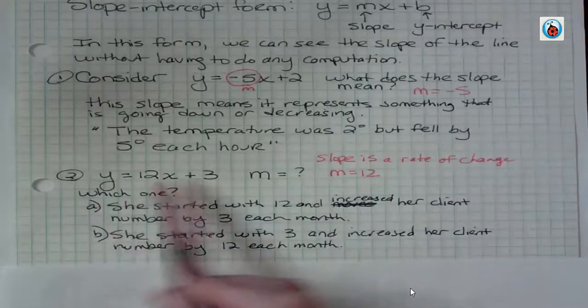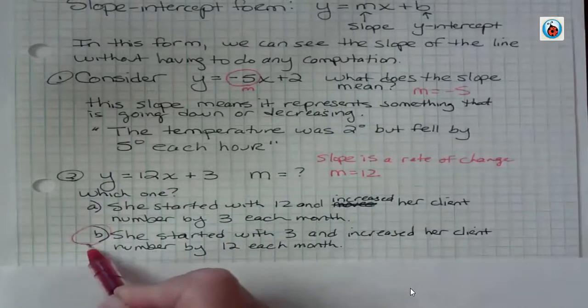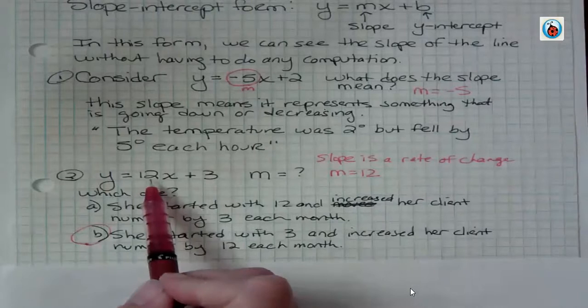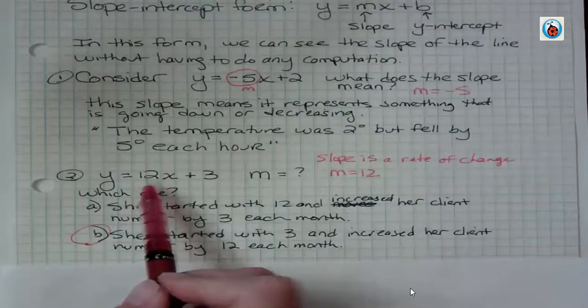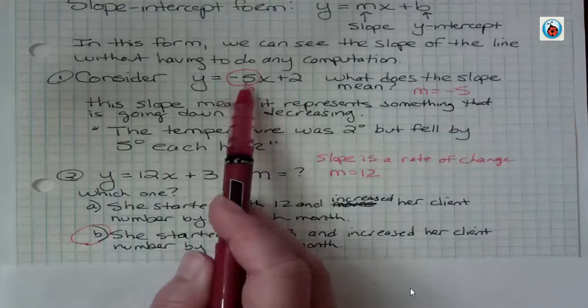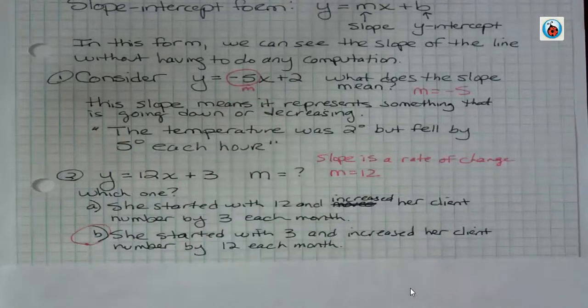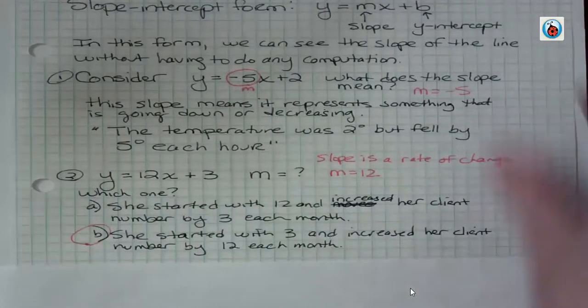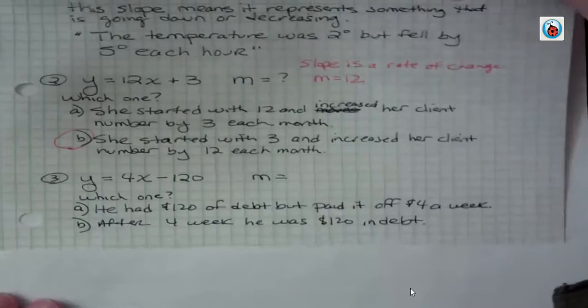That's the description that makes sense for this equation. Starting at 3 and increasing by 12 every month. In this case, it's positive slope, so she's increasing. In the last one we saw, it was a negative slope, so they were decreasing or falling. That's an important thing about negative and positive.